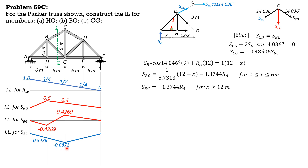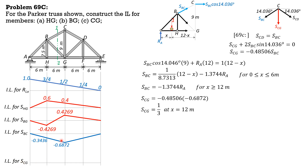Since the maximum ordinate of S_BC is −0.6872 at x = 12, we substitute into S_CG = −0.48506·S_BC. At x = 12: S_CG = −0.48506·(−0.6872) = +0.3333, or one-third. So the influence line for S_CG has the same shape as S_BC but positive, with maximum ordinate of one-third. That's the solution for this problem. I hope you can now draw the influence line for a different shape truss on your own.